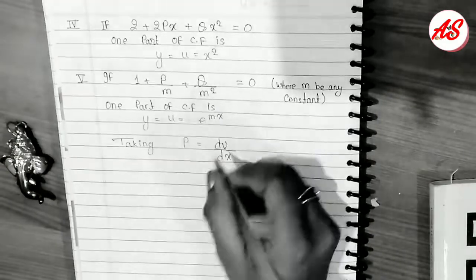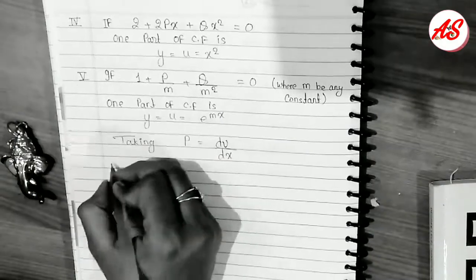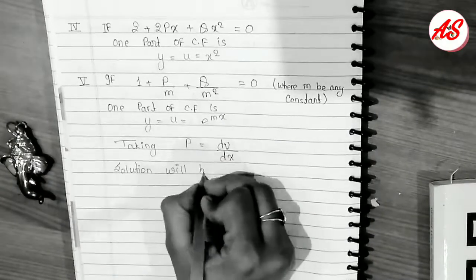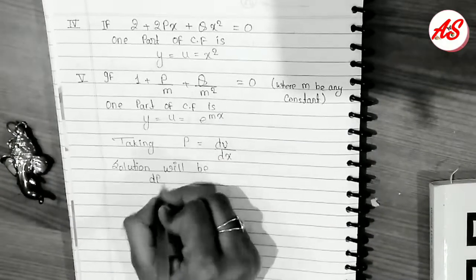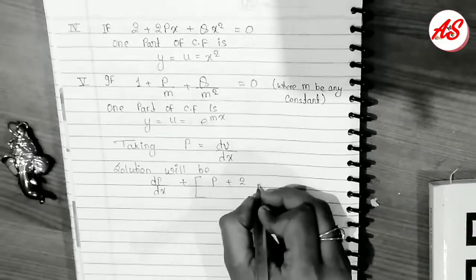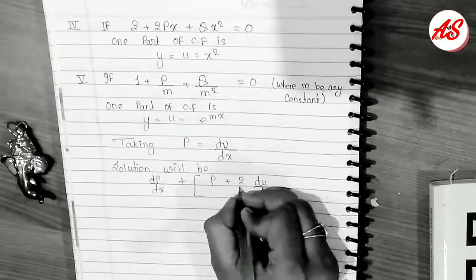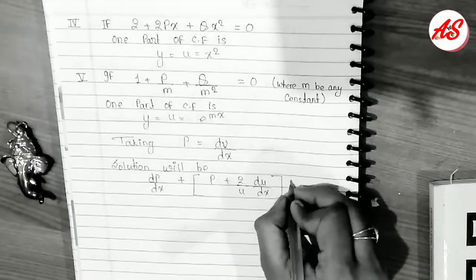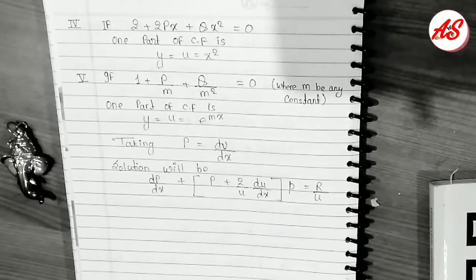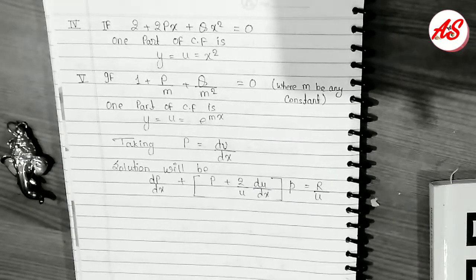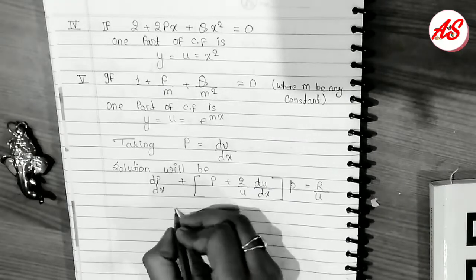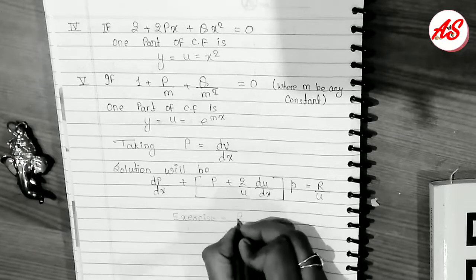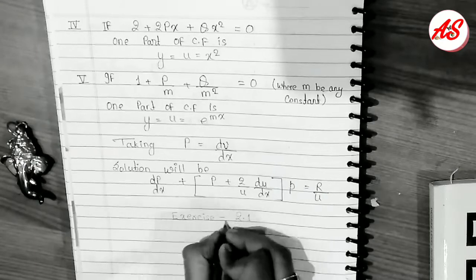Taking p = dy/dx, the solution becomes dp/dx + (P + (2/u)(du/dx))·p = R/u. This is the reduced linear differential equation used for finding the solution.